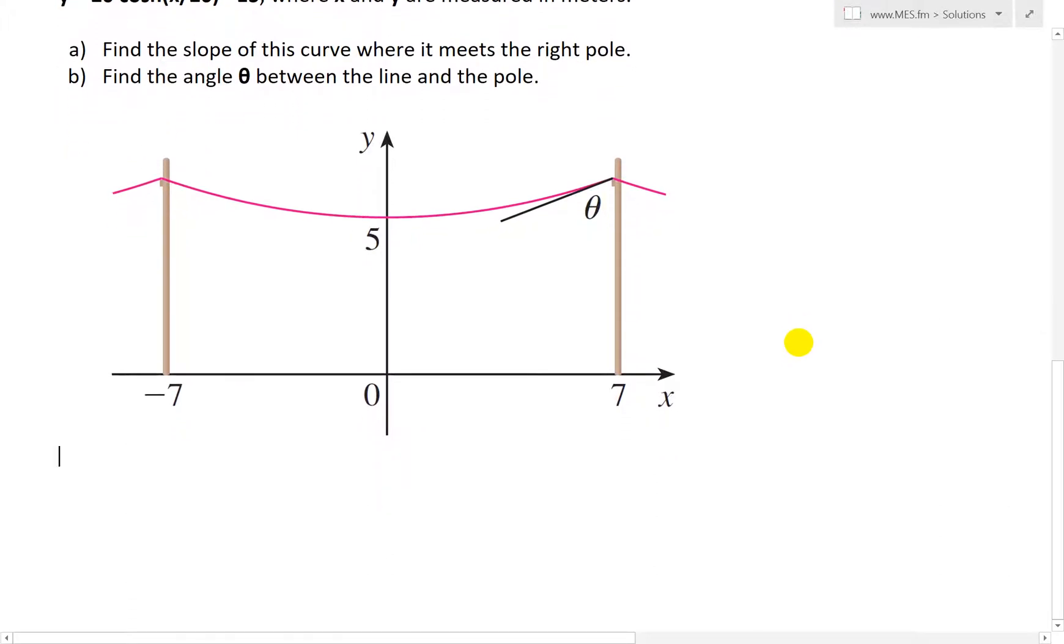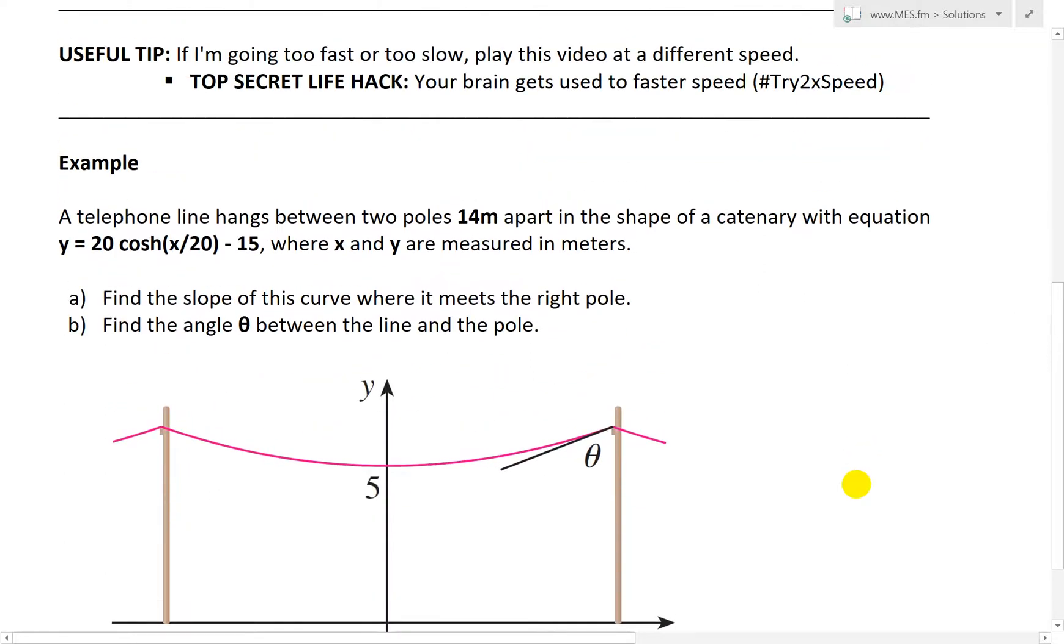Well, here is our catenary with an x-y graph drawn here, and this distance is obviously 14 meters across. And setting the lowest point at the intersection there, so we have negative 7 here, and this is 7 for the x-axis like that. So let's look at part A first.